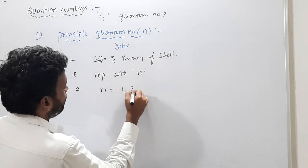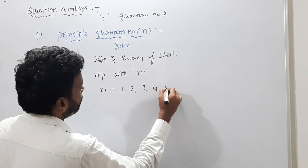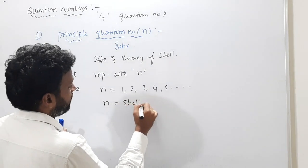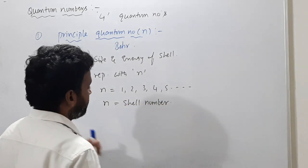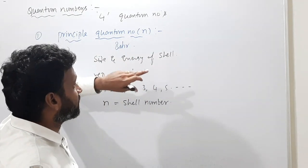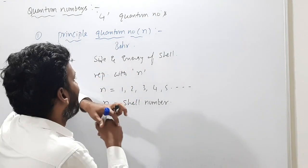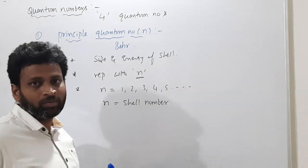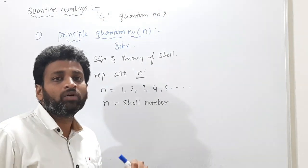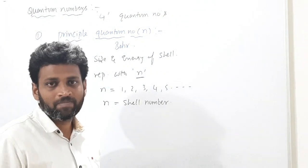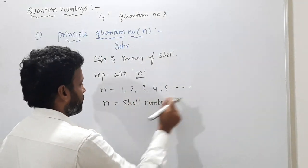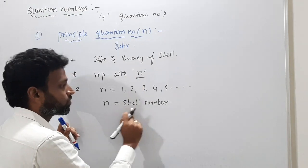The principal quantum number was given by Niels Bohr. It explains the size and energy of the shell and is represented by small n. N takes the values 1, 2, 3, 4, 5, and so on — no zero, no negative values. N is the shell number.